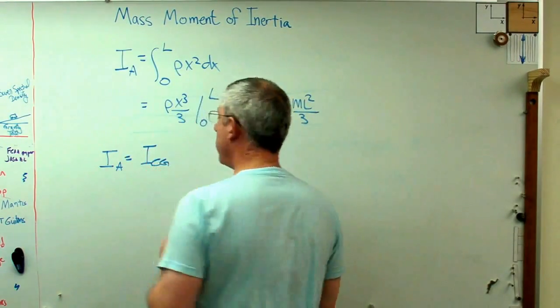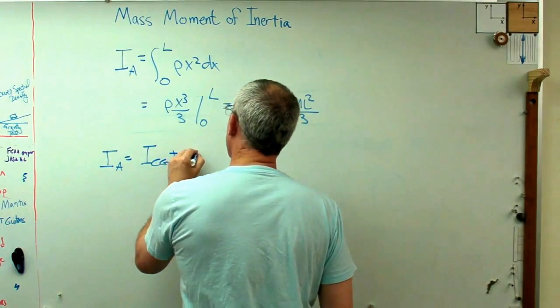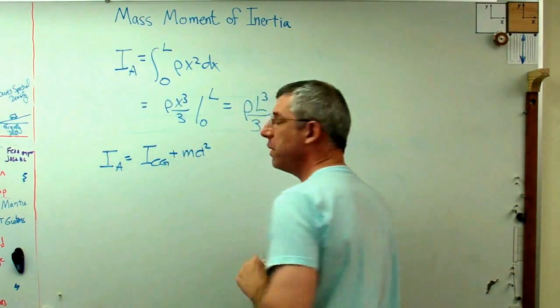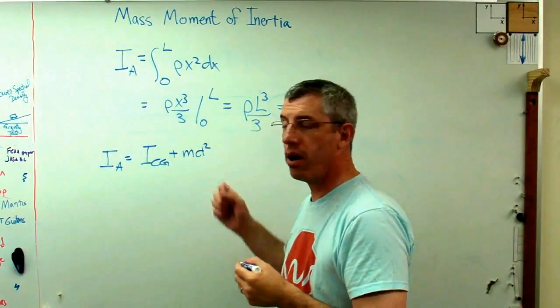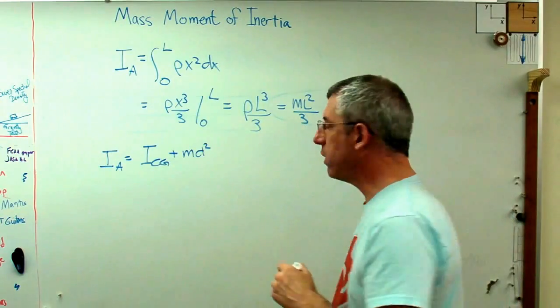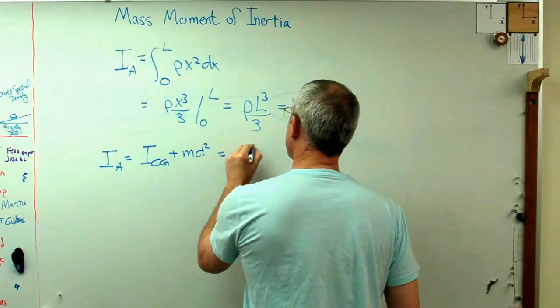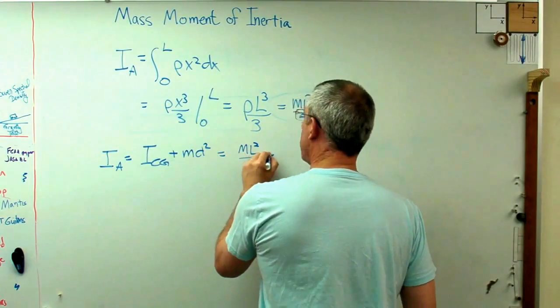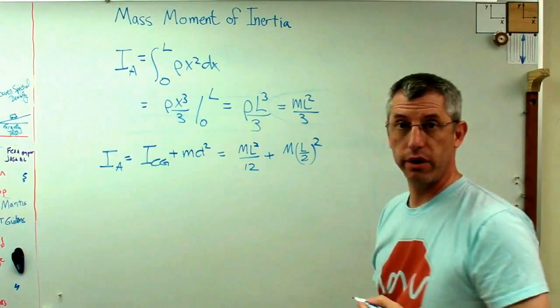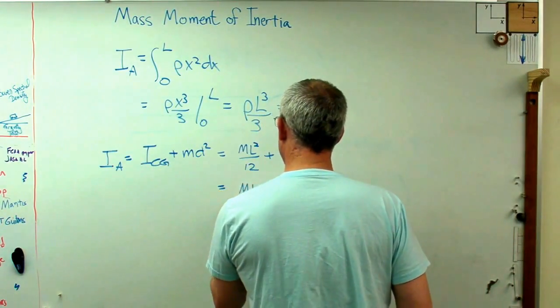If I only know I_CG, which maybe I looked up in a table somewhere, and I know that I've got this md squared term in there. Well, I know m is the mass of the bar, and d is the distance from the center of rotation to the center of gravity of the bar. So that's going to be—let's write this all out—this is ML squared over 12 plus M times L over 2 squared.